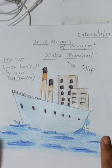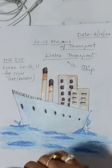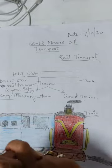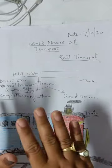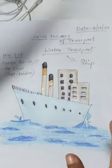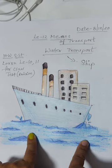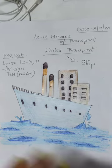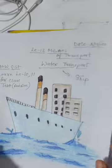I hope the previous video is clear to all of you. If you have any query regarding the three types of transport — first is land transport, second is rail transport, and third is water transport — it should be clear to all of you. If you have any kind of query then ask me.